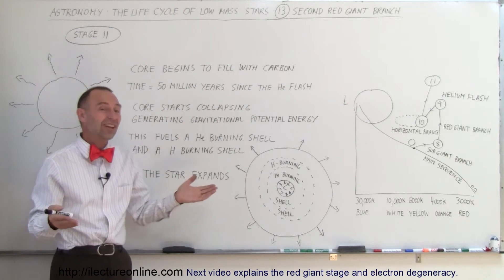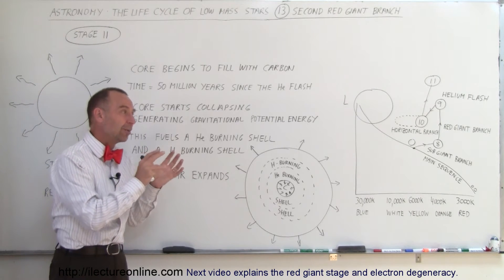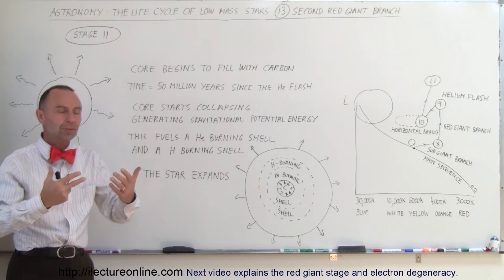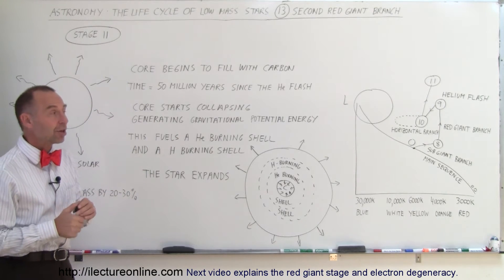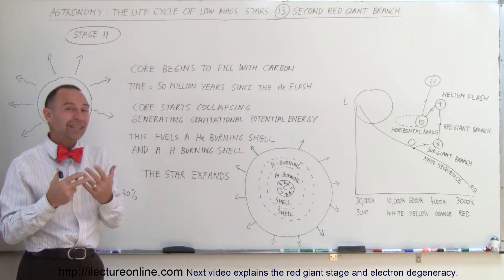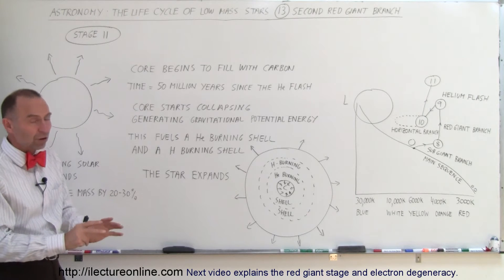For the sun, the main sequence stage lasts 10 billion years, but the horizontal branch stage where it's a red giant burning helium into carbon only lasts about 50 million years. For bigger stars it's even less, and for smaller stars than the sun it could take more than 50 million years.